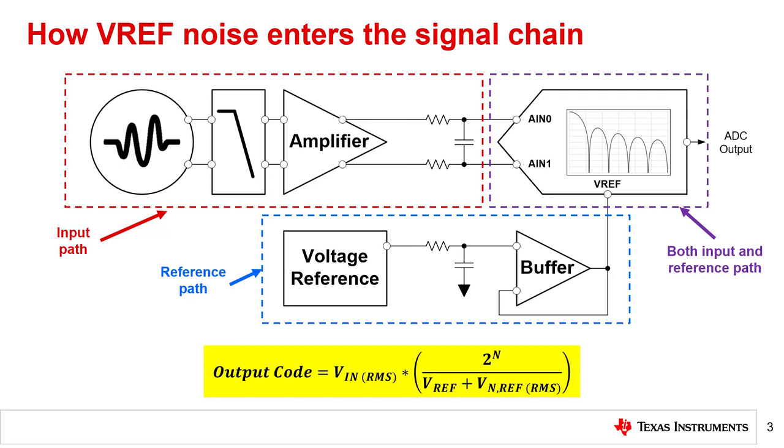One other important characteristic of the output code equation is that the RMS reference noise directly affects the ADC's output. Given this relationship, it is fair to assume that the noise reported in an ADC's data sheet must include some reference noise. The next slide discusses when this is true.